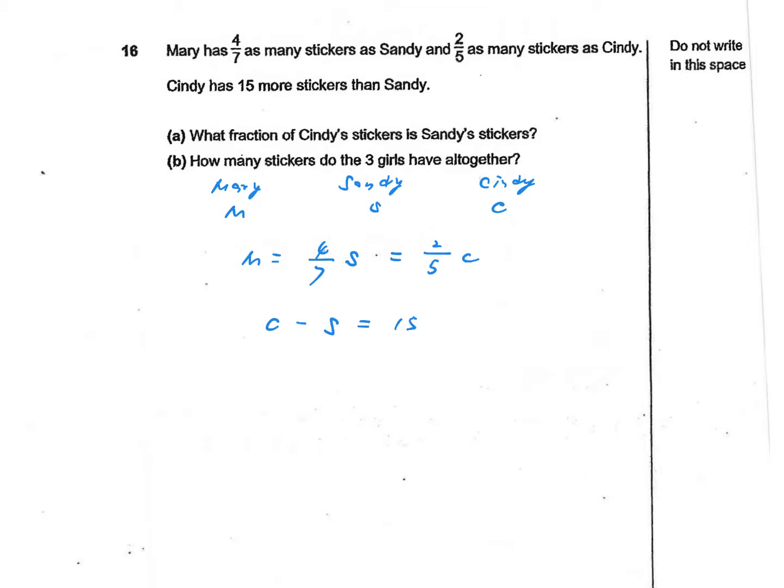Now let's take a look at the questions. Number 1: what fraction of Cindy's stickers is Sandy's stickers? We basically need to figure out the ratio between Cindy and Sandy's stickers, so C over S. According to relationship number 1, we need to write this as a fraction.